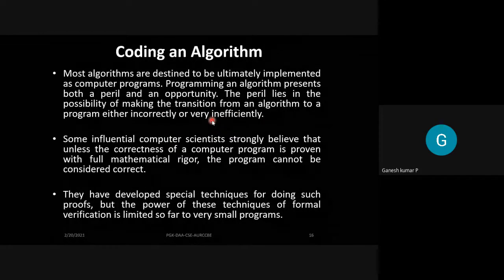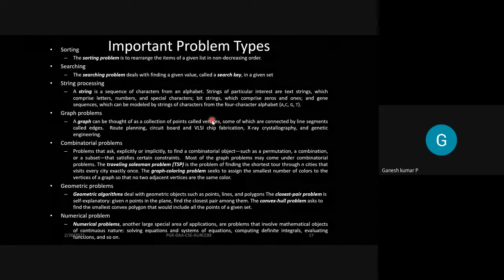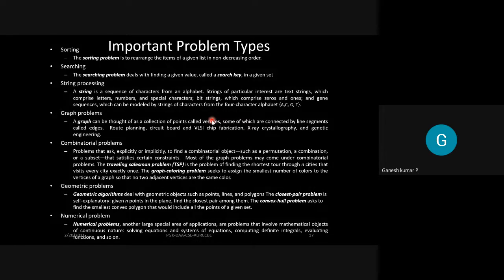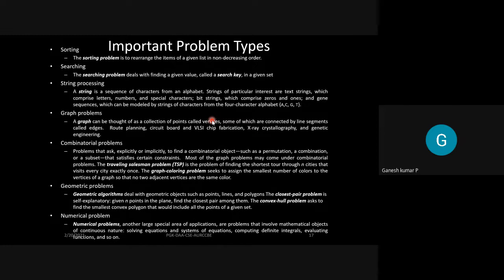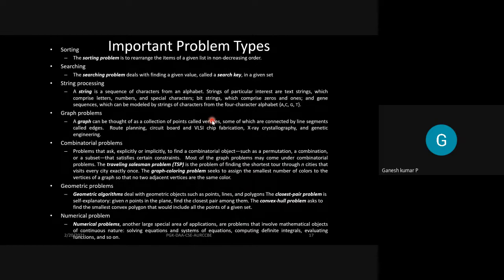Coding an algorithm requires a software platform and computational device. Regarding problem types, the different categories include: sorting, searching, string processing, graph problems, geometric problems, and numerical problems. Students should be aware of all these categories. The topic of fundamentals of analysis of algorithms will be covered in the next session.